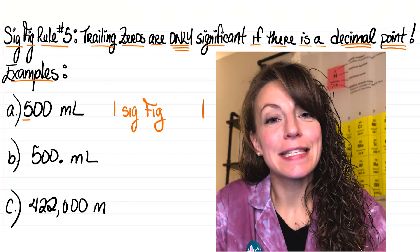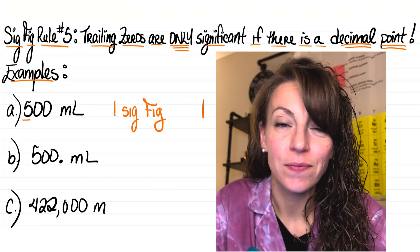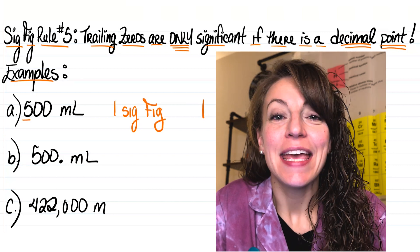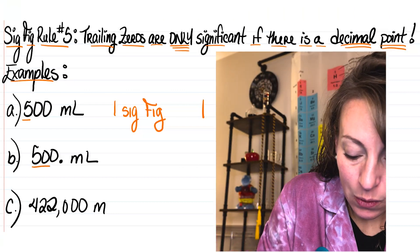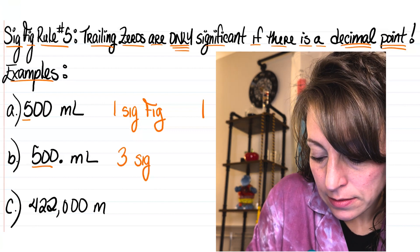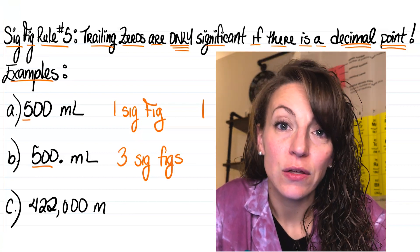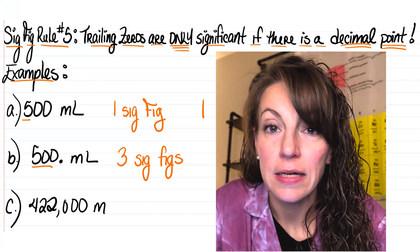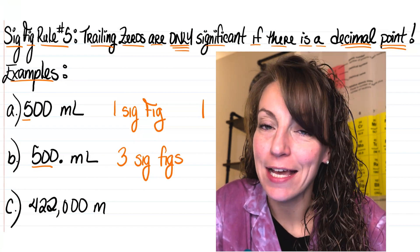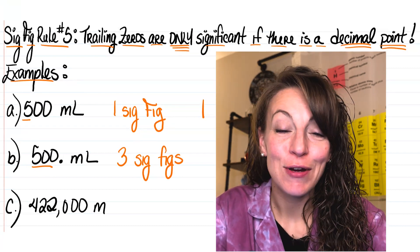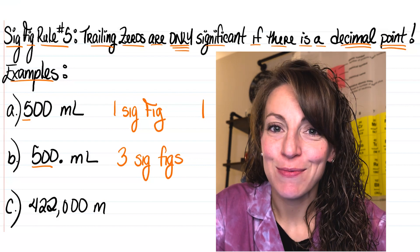In letter B, it's still a measurement of 500 milliliters, but now we have a decimal point present at the end of that value. What that tells us is that those two trailing zeros after that number five are now significant, so we have a total of three sig figs. The reason why this value is the same 500 but the significant figures are different is we use significant figures to indicate the precision of the instrument used to take a particular measurement.